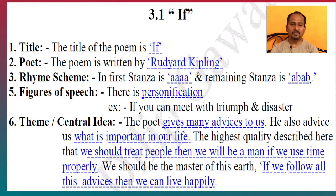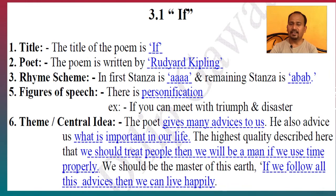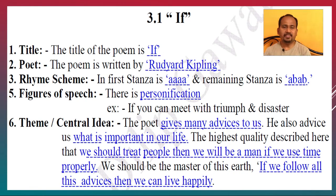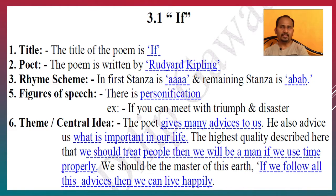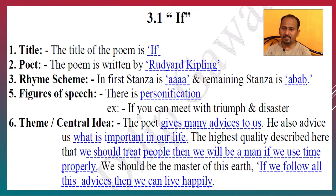Next appreciation of the poem, that is 3.1 — If. Points are: Title — the title of the poem is If. Next point, Poet — the poem is written by Rudyard Kipling. Next point, Rhyme Scheme — in the first stanza the rhyme scheme is ABAB, and the remaining stanzas the rhyme scheme is also ABAB.